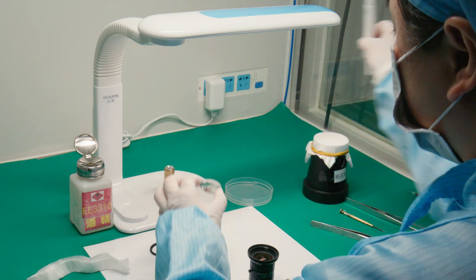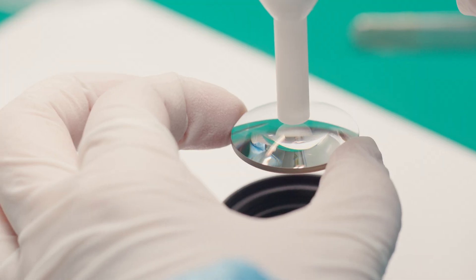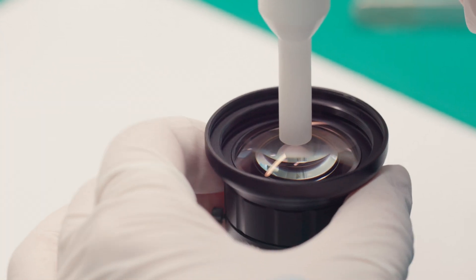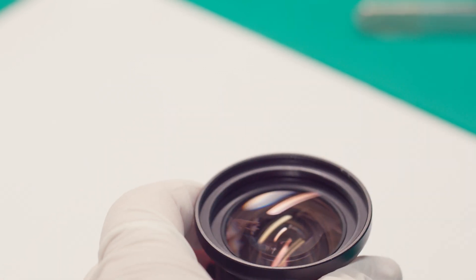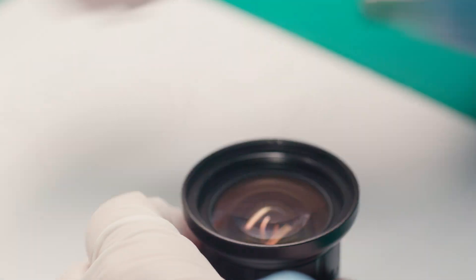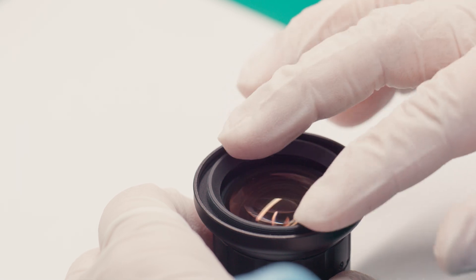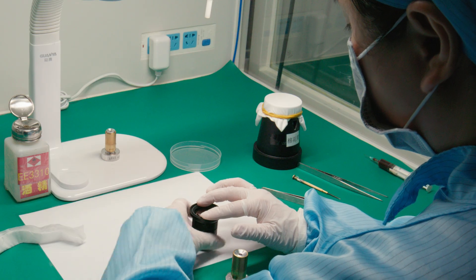Large lens elements require additional tools, like a vacuum chuck, to assemble them into their mechanical seat without tilt or de-center. Threaded retaining rings are also installed to secure the optics in place.